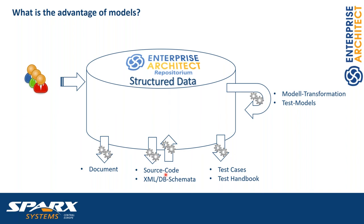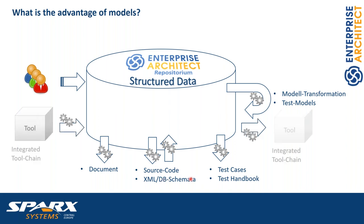For instance, we can start with a logical data model, automatically transform it into a physical data model, and then generate the database schema. Enterprise Architect also provides standardized interfaces for integration in a tool chain — it supports XMI in different versions, which is the XML Metadata Interchange format, as well as OSLC (Open Services for Lifecycle and Collaboration). The powerful API allows you to integrate any other tool, automatically import data into the model repository, process the data, and export it to the next tool in the chain.